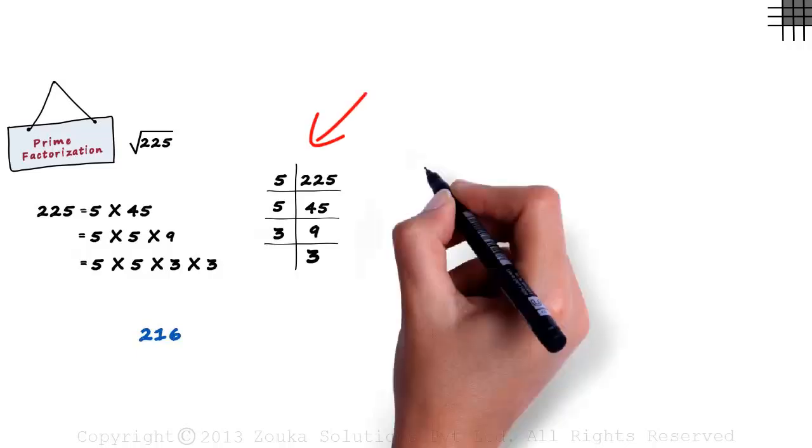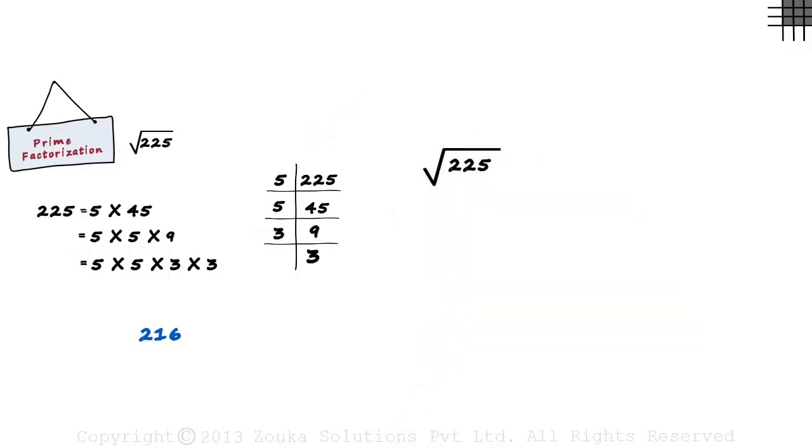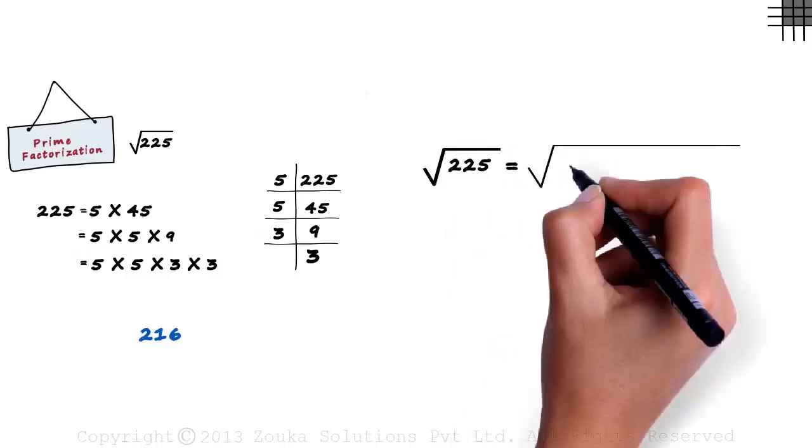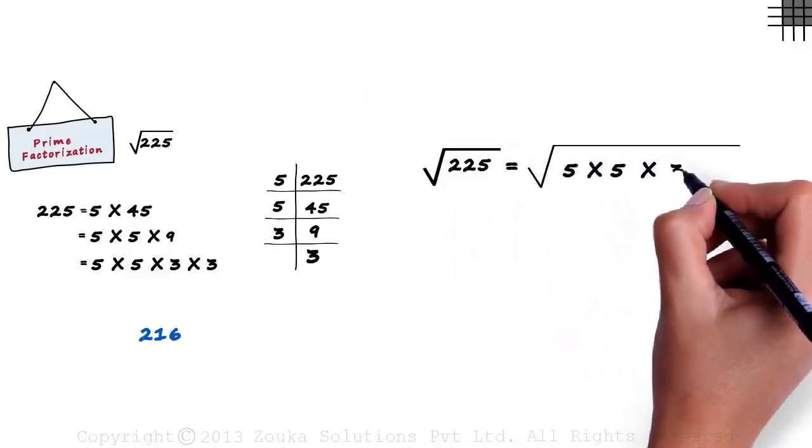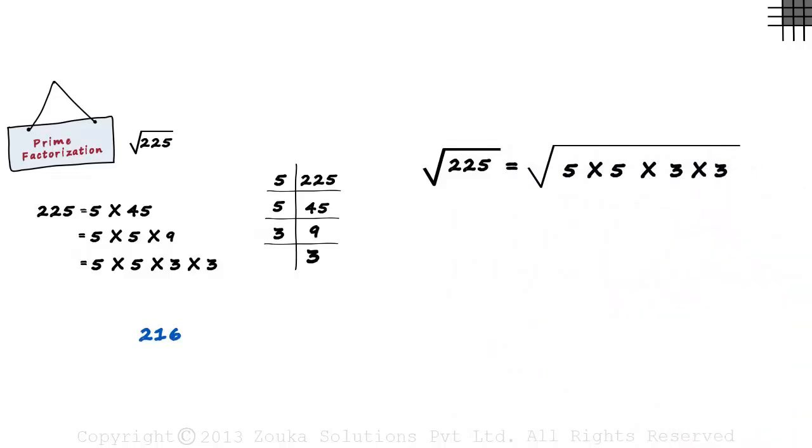How will this help us find the square root of 225? You will not believe how simple it is. We write this as square root of 5 times 5 times 3 times 3. We have to make groups of two same numbers.